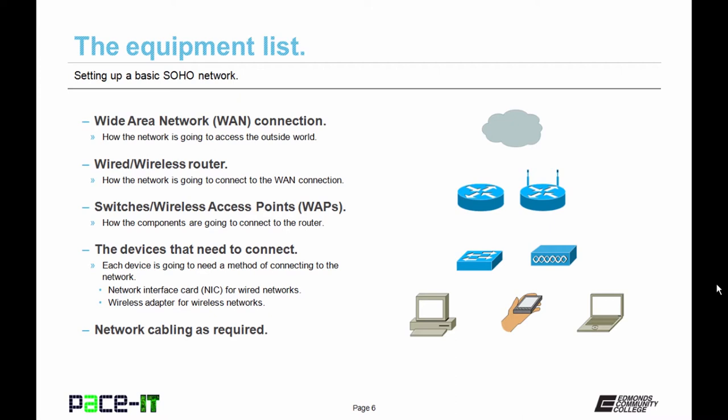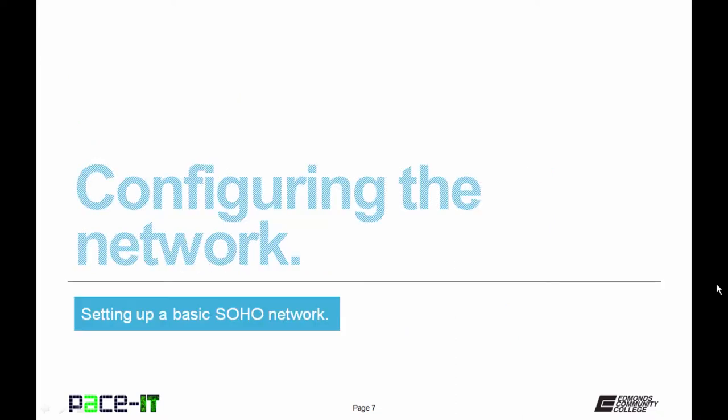Some devices will need network interface cards for wired networks; others are going to need wireless adapters for wireless networks. And finally, you need to consider your network cabling. You may be required to install new cabling or to get the appropriate patch cords. With that, let's move on to configuring your SOHO network.